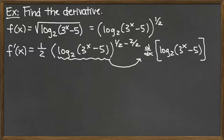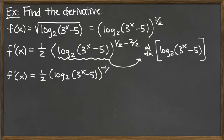So let's keep going here with the derivative. We've got the derivative is the one-half out front times log base 2 of 3 to the x minus 5, and that is now raised to the negative one-half.